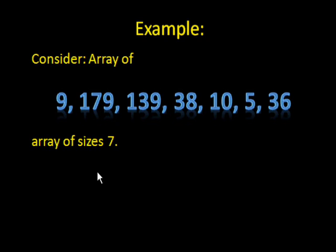First, consider this array I have here in front of me of seven numbers: 9, 179, 139, 38, 10, 5, 36. How do we sort that? Using radix sort, we'll sort it like this.